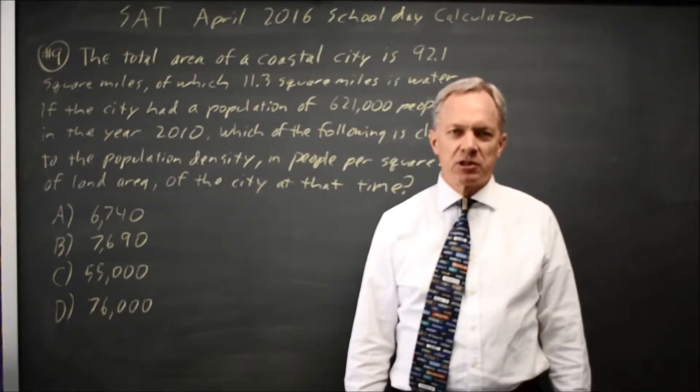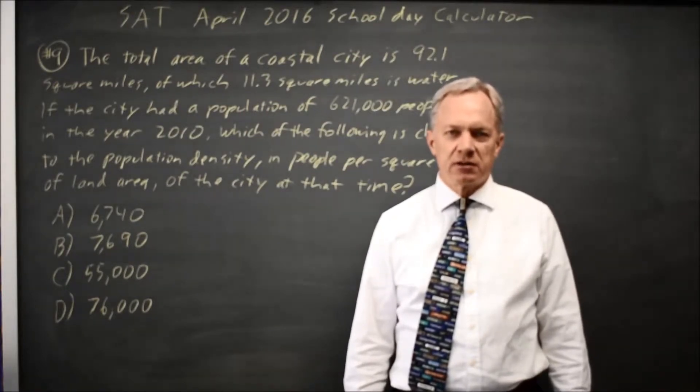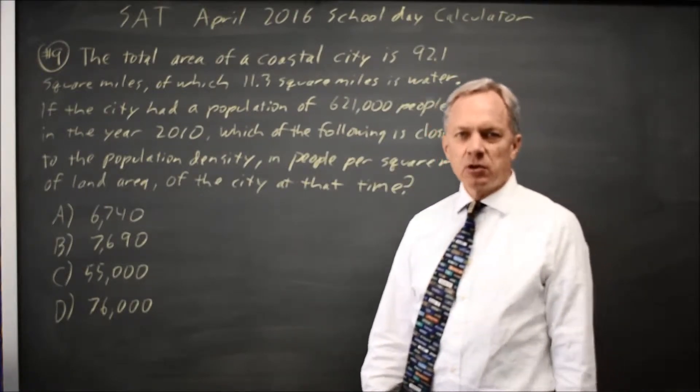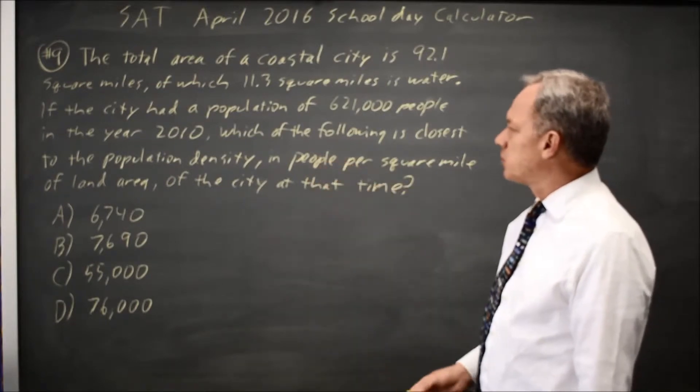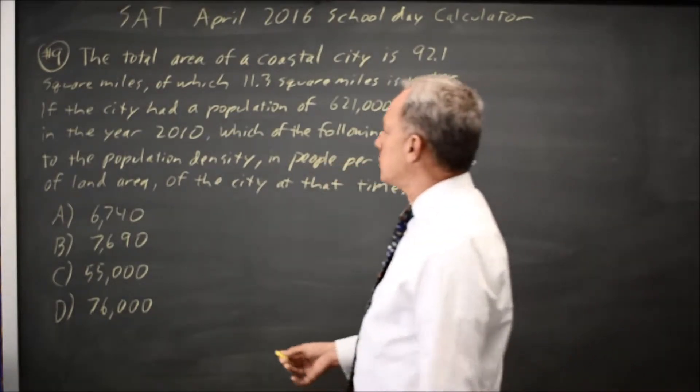The College Board gives us a word problem describing the total land area of the city and its population in the year 2010, and the question is, what is the population density in people per square mile of land area?